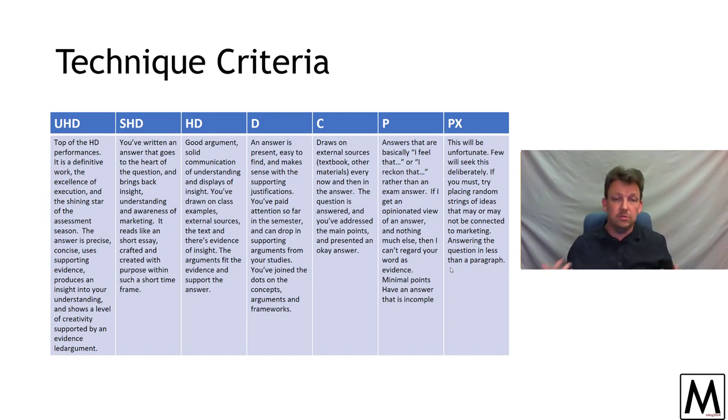First point where you get to score some decent return is a credit grade. That is going to require you to draw on external sources. The thing to understand about the way the grades criteria are laid out is as each criteria goes up one, the previous elements are expected to be present. In credit, you're going to need to use external referencing sources. Therefore, that's going to need to be present at distinction, high distinction, super high distinction, and ultra high distinction. Your baseline to get out of the pass and into credits: answer the key points. It doesn't have to be a brilliant answer, but it does have to be an answer. You do need to draw on sources and references.